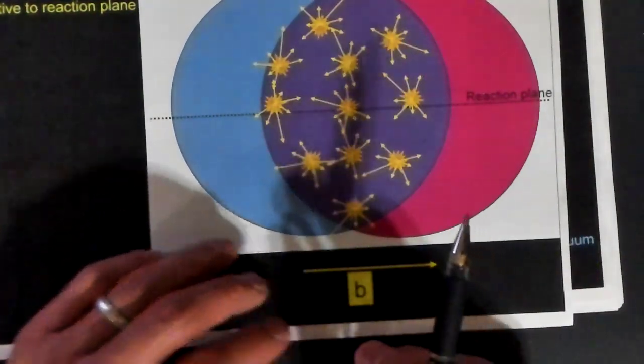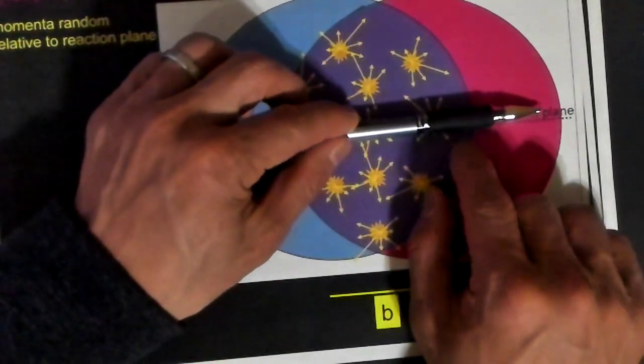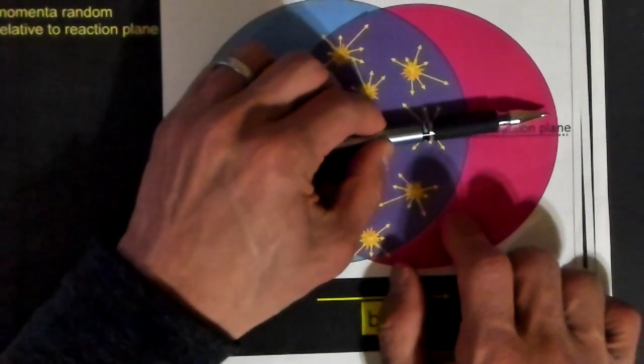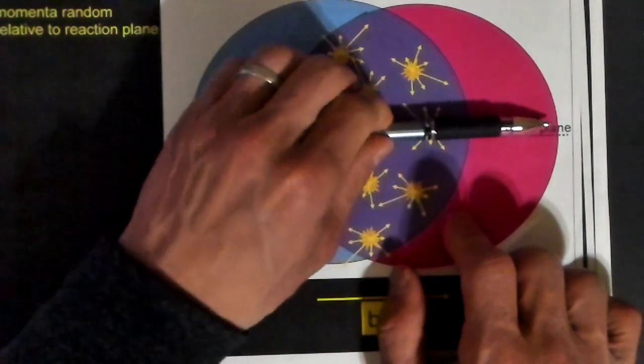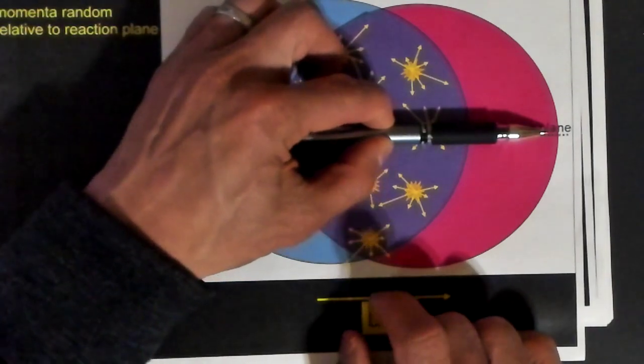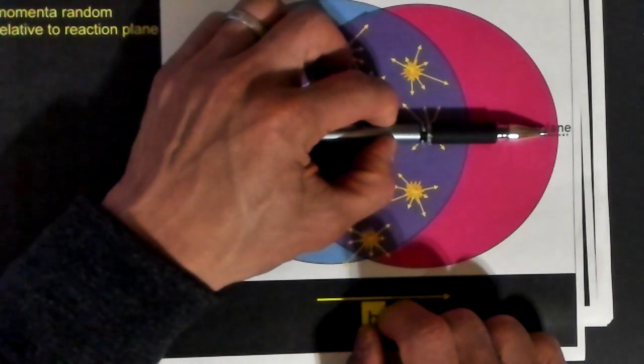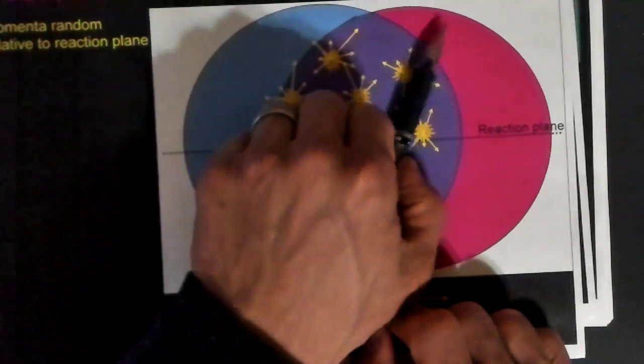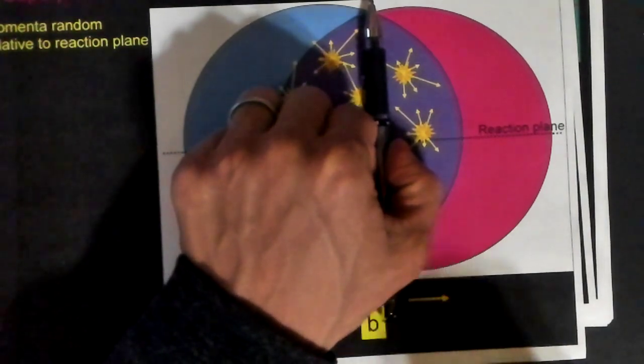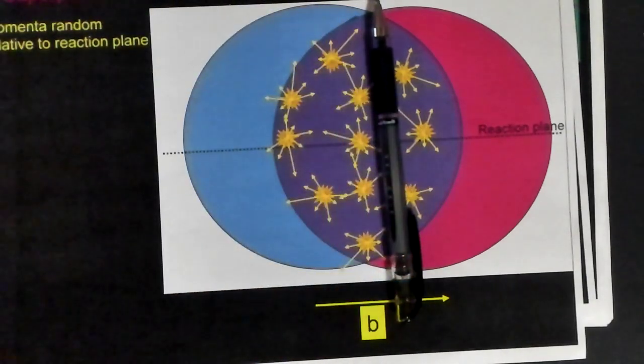We'll be measuring something called the azimuthal angle, measured perpendicular to the beam axis, but starting from phi equals zero. The azimuthal angle will be called phi. Phi equals zero corresponds with the reaction plane, and phi equals 90 degrees will correspond with the perpendicular to the reaction plane.